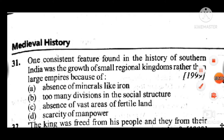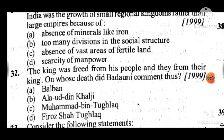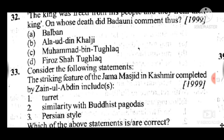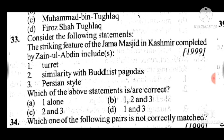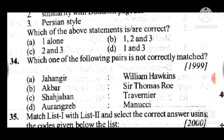Question 32: The king was freed from his people and they formed their king — on whose death did Badauni comment this? Answer to question 32 is C: Muhammad bin Tughlaq. Question 33: Consider the following — the striking features of Jami Masjid in Kashmir completed by Zainul Abidin. Answer to question 33 is B: statements 1, 2 and 3 are all correct, including similarity with Buddhist pagodas and Persian style.